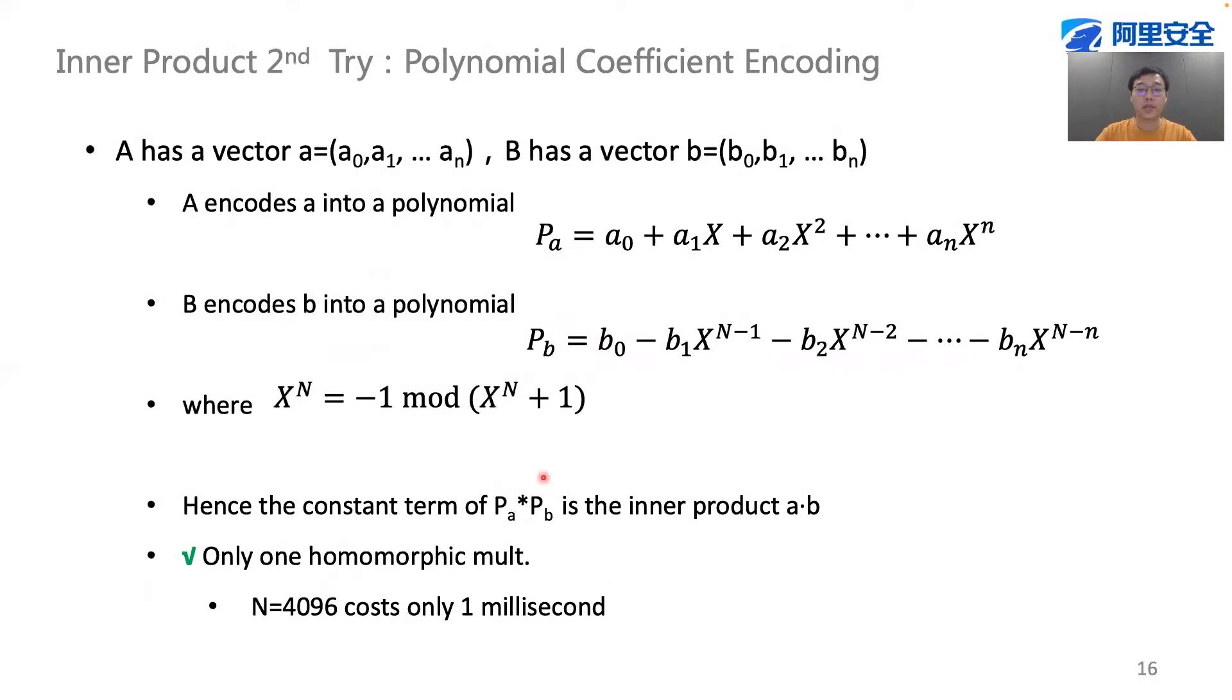The second idea is to simply encode the vector into the coefficients of the polynomial. Well, this is a very simple trick, but it works like a charm. The solution is elegant for inner product because only one homomorphic multiplication is enough, and there is no expensive homomorphic rotation.